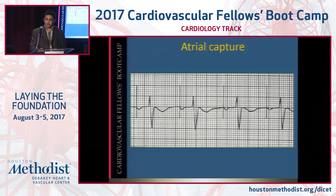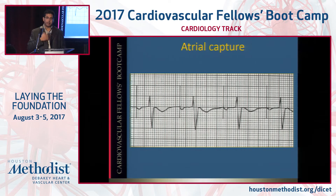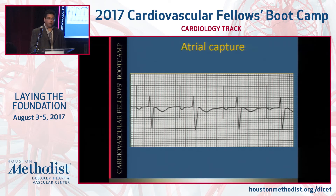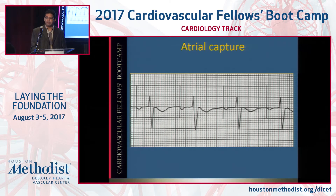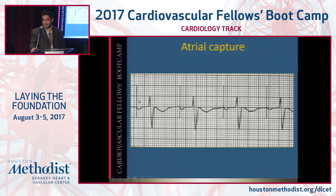Atrial capture: you can see pacing spikes followed by a P wave — that's atrial capture. Pacing spikes are easy to see with epicardially placed pacer wires or a floating temp wire when you're using lots of power and the electrodes are far apart. In older pacemakers every lead had one electrode, so the positive and negative were far apart and textbook EKGs showed massive pacing spikes. But in the real world nowadays, the positive and negative electrodes are very close to each other, so you have to look carefully for pacing spikes with implanted pacemakers.